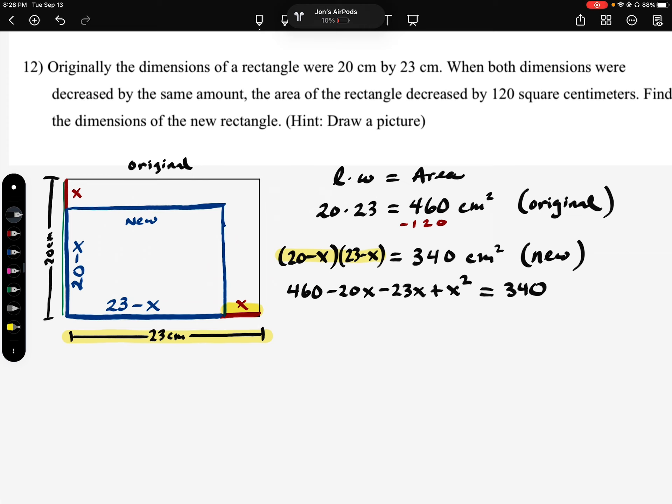Okay, now the next thing we need to do is we need to combine our like terms. We're going to do x squared minus 43x plus 460 equals 340. Set it equal to 0. So subtract 340 from each side. When we do that, we'll have 0, and on this side here, we have 120. So x squared minus 43x plus 120.